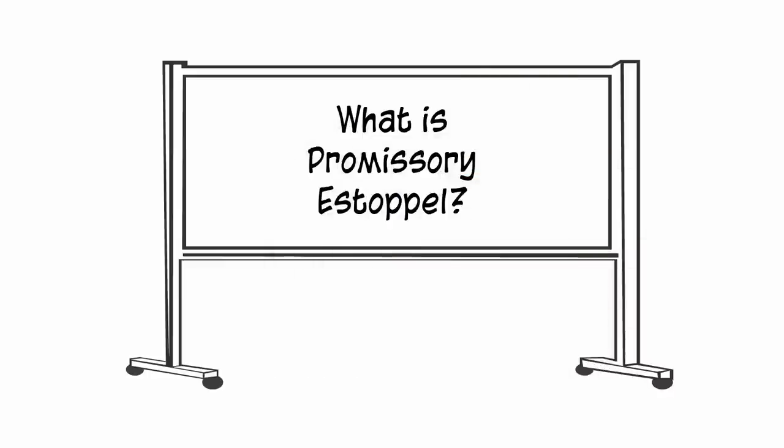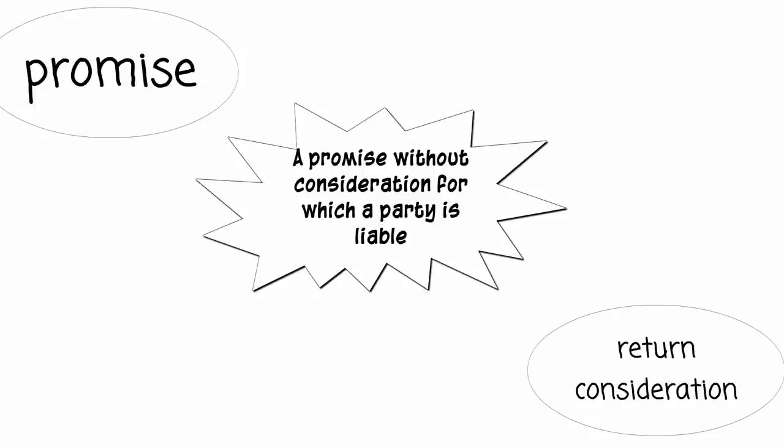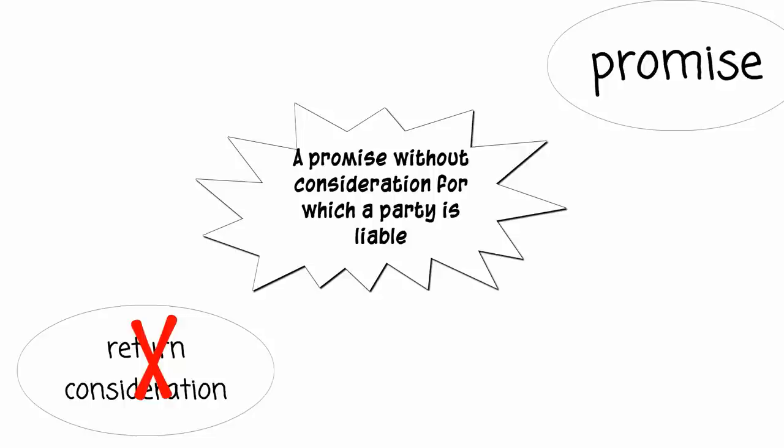In this video, we will discuss promissory estoppel. Promissory estoppel is where we have a promise, there is no return consideration, but the party might still be liable for the promise.